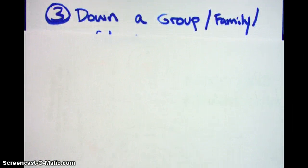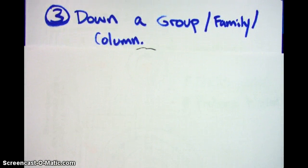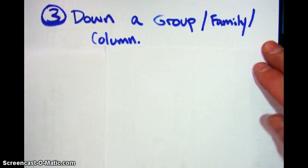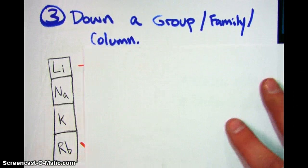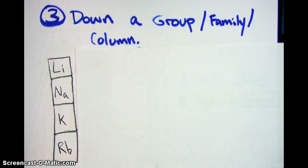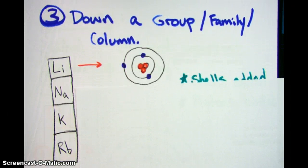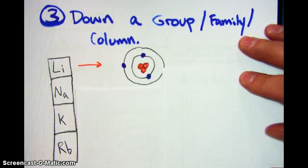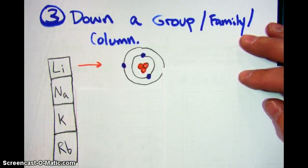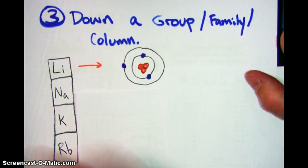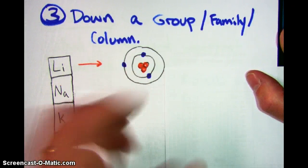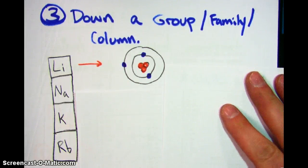Part three: what happens when we move down a group, otherwise known as a family or a column? Again, we're going to start with a frame of reference. We're going to start with lithium again, and this time we're going to move down to rubidium in this first column on the periodic table. For lithium, I have the Bohr model — you've got the protons and the electrons. As you go down the column, as we go down the rows, really what you're adding is another ring of electrons, and also a bunch more protons. So we've got to think about how those two things are going to interact with each other going this direction.